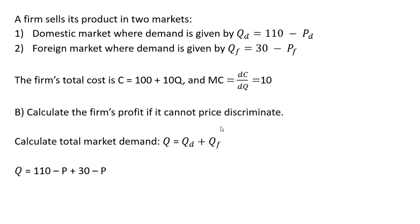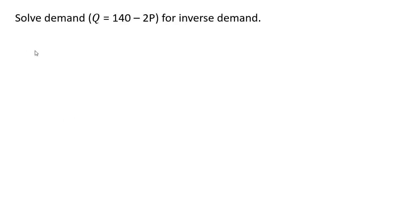Now we calculate the firm's profit if it cannot price discriminate — that is, it must charge only one price. We need to calculate total market demand, which is domestic demand plus foreign demand. Substituting, we get 110 minus P plus 30 minus P, giving total market demand of 140 minus 2P. Solving for price to get inverse demand and dividing through by 2, the inverse demand is 70 minus 0.5Q.